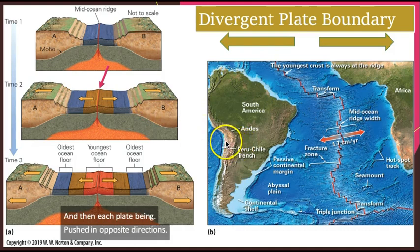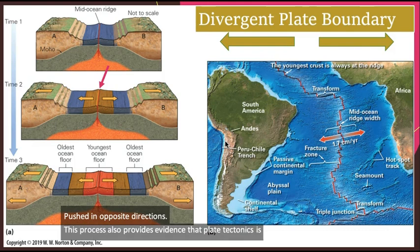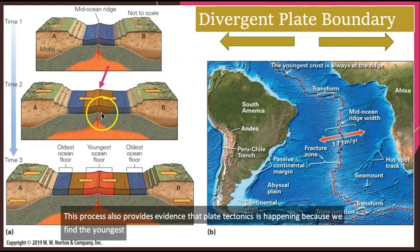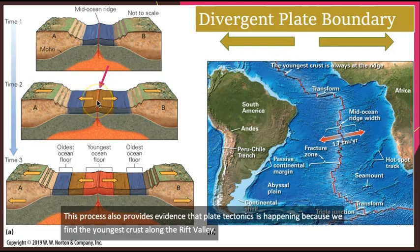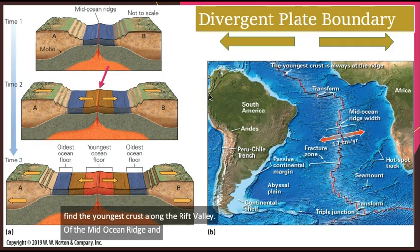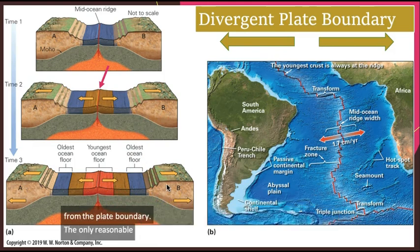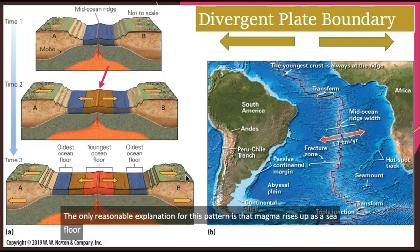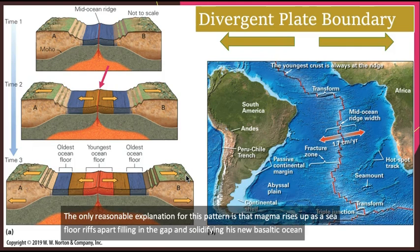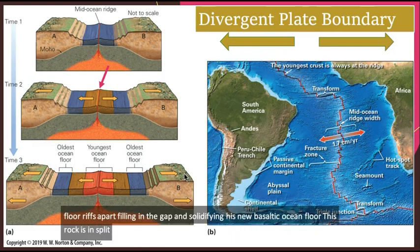This process also provides evidence that plate tectonics is happening, because we find the youngest crust along the rift valley of the mid-ocean ridge and progressively older crust the farther we are away from the plate boundary. The only reasonable explanation for this pattern is that magma rises up as the seafloor rifts apart, filling in the gap and solidifying this new basaltic ocean floor.